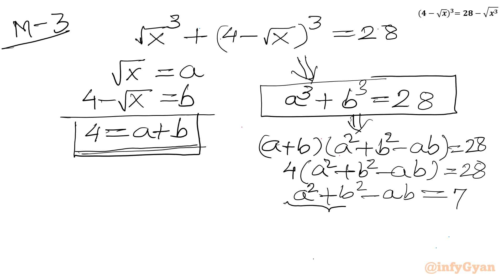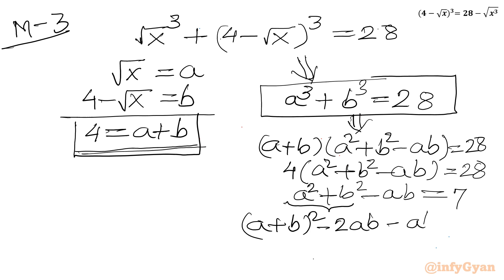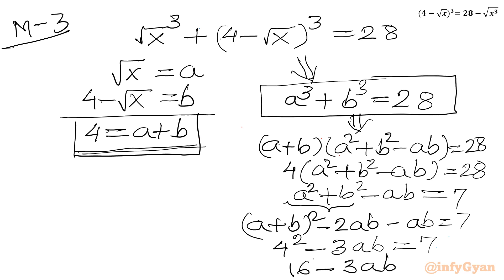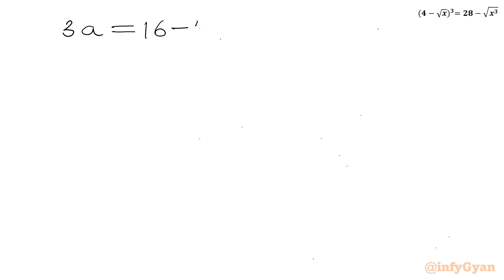I rewrite a² + b² as (a + b)² - 2ab = 16 - 2ab. Substituting: (16 - 2ab) - ab = 7, which gives 16 - 3ab = 7. Therefore 3ab = 9, and dividing by 3: ab = 3.